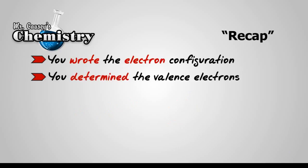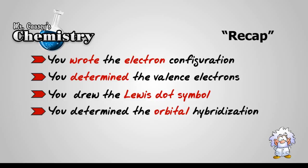So let's recap. You wrote the electron configuration. You determined the valence electrons. You drew the Lewis dot symbol. You determined the orbital hybridization.